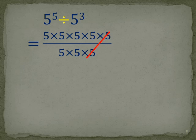One of the ones underneath will cancel with one of the ones on top, because 5 divided by 5 is 1. We can do this again and again.